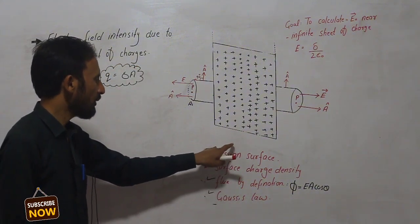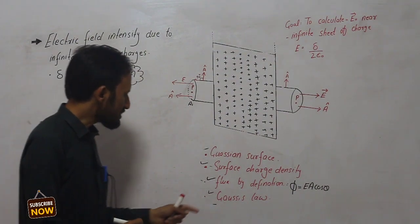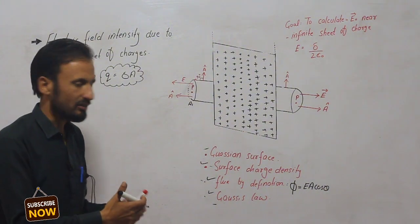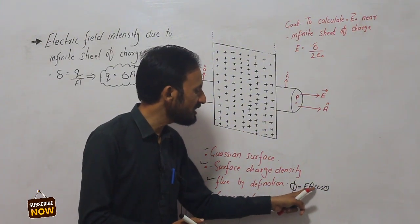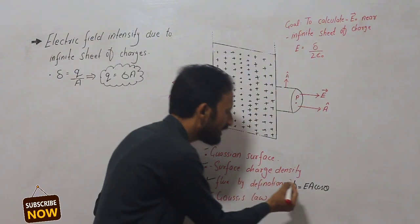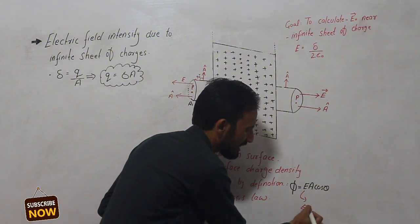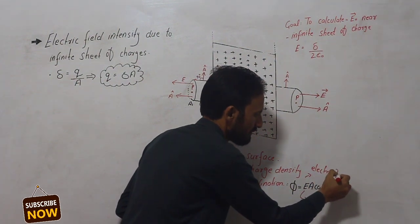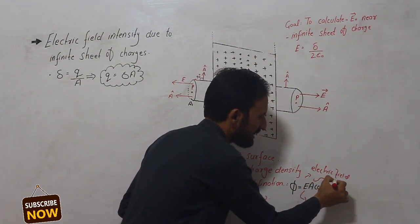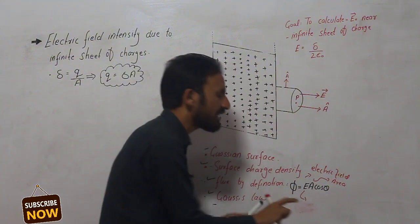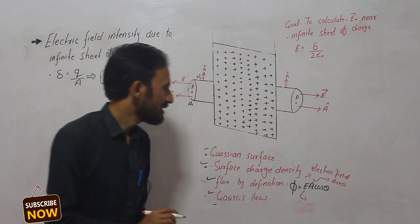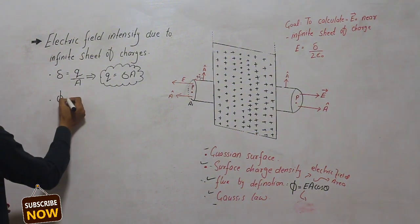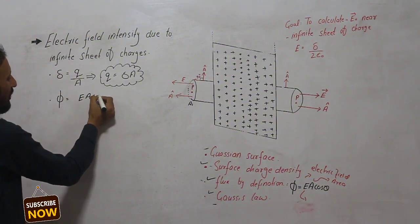The first step is to find the flux by definition. The definition of electric flux is E times A times cosine theta, where E is the electric field, A is the area, and theta is the angle between E and the area vector A.